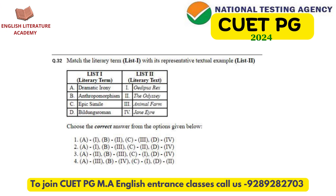The 32nd is again a matchmaking question where texts need to be matched with their genres. It is considered easy because all the texts mentioned are very renowned and have been read by students at the graduation level.